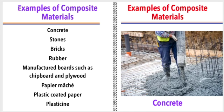The following are some examples of composite materials: Concrete, Stones, Bricks, Rubber, Manufactured boards such as chipboard and plywood.